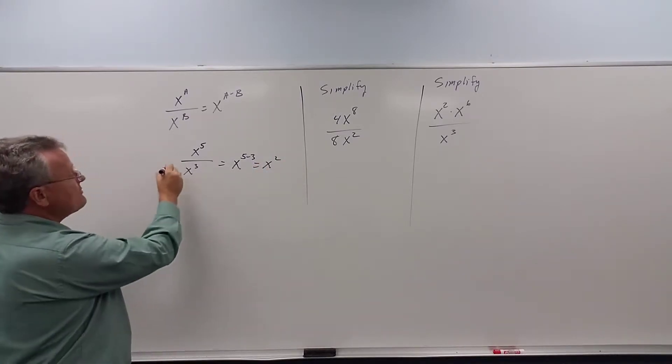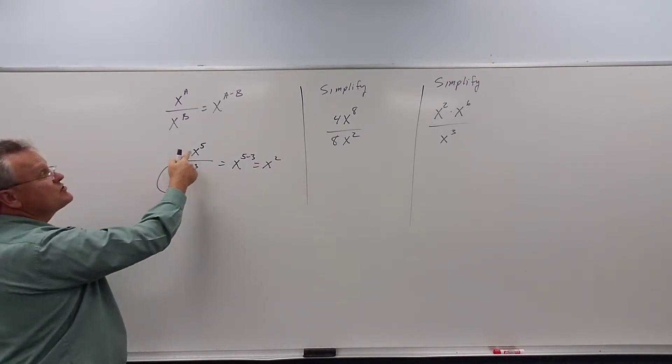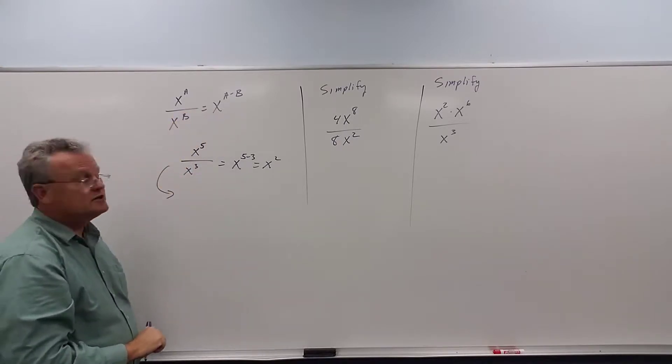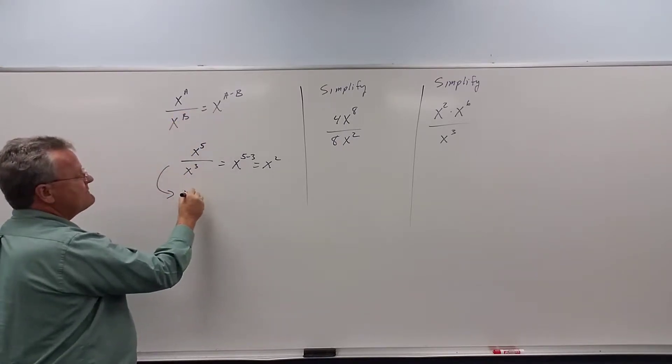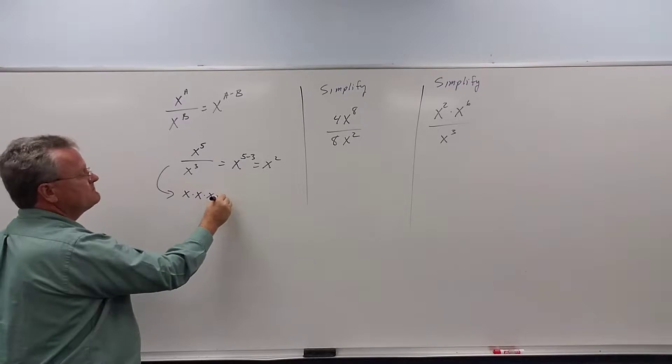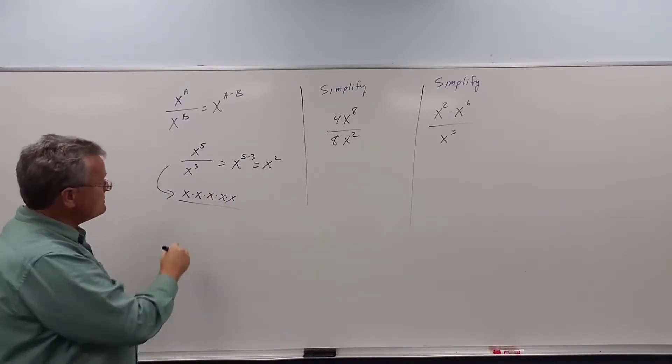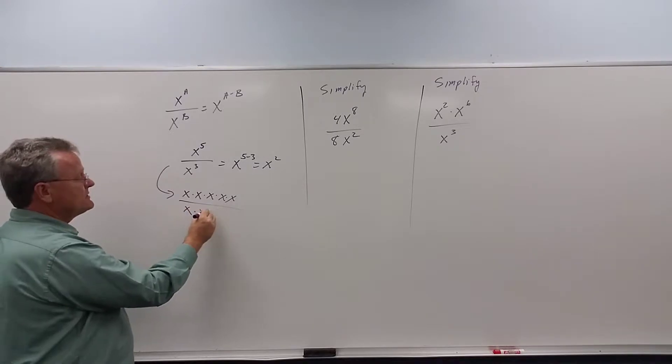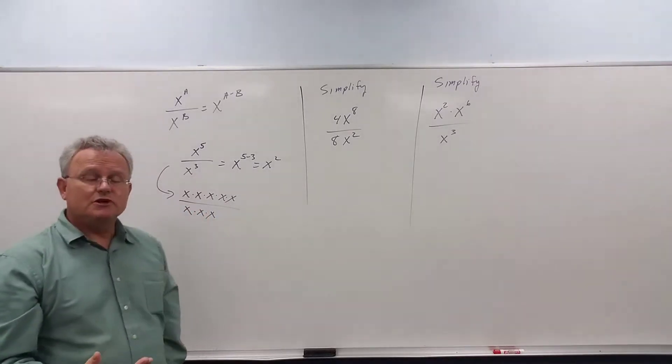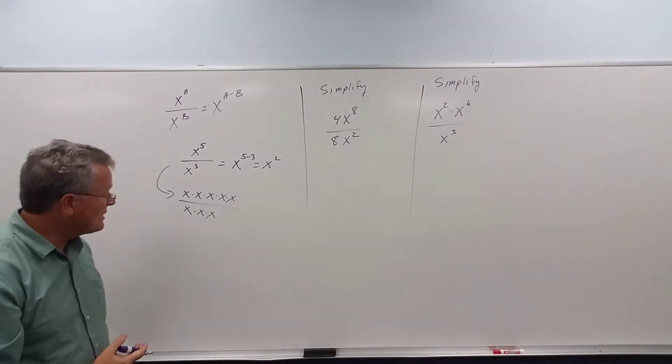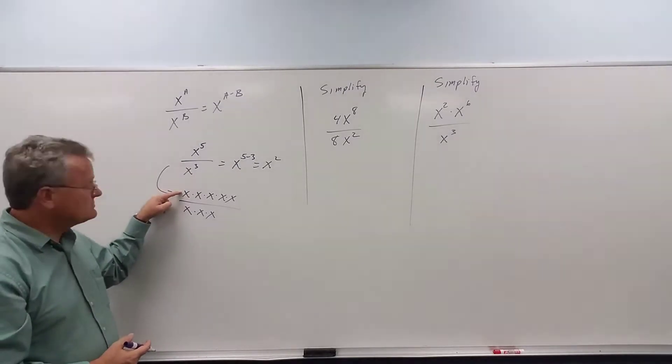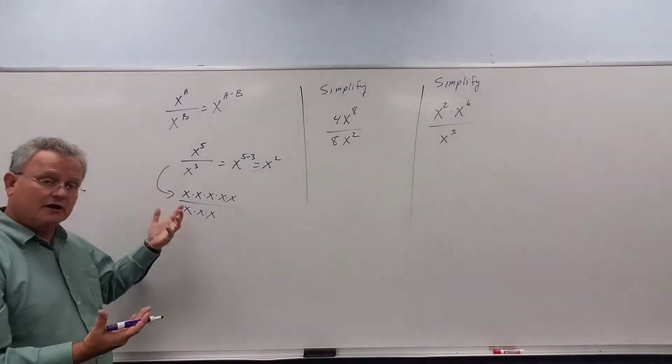Well, another way we could think of this, and this shows us why we subtract, x to the 5 is 5 x's multiplied, x to the 3 is 3 x's multiplied. Well, as we studied earlier with fractions, whenever you have common factors in the numerator and denominator, they cancel.